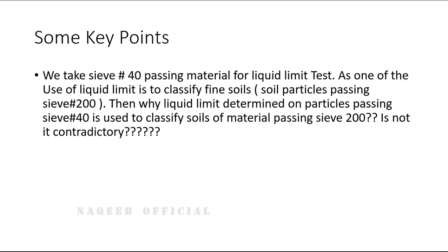The USCS system defined sieve number 200 passing material as fines, but the liquid limit concept determined by Casagrande was published in 1932. One reason described in the literature — though not technically the pure reason — is that in the field you find mixtures of coarse particles rather than pure fine soil, so Casagrande considered soil at an intermediate sieve size. My position is that technically we should determine liquid limit on sieve number 200 material, and I am personally researching this topic.